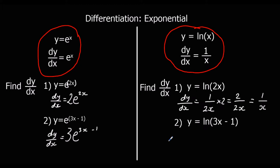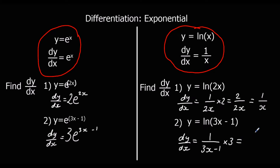For question 2 with ln, dy/dx will be 1 over (3x minus 1), multiplied by the bracket differentiated, which is 3. So that gives us 3 over (3x minus 1).